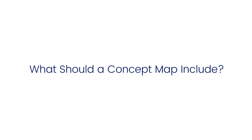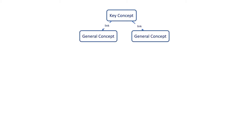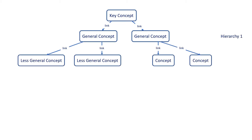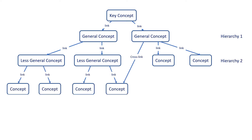What should a concept map include? First, identify the key concept or main topic. Think about the problem you want the concept map to resolve. This key concept should connect to all other concepts on your map and will direct the hierarchical structure. Second, categorize all the general concepts that relate to the key concept you identified. Order them with the most general concepts first — this comes under hierarchy 1 — followed by less general concepts, which come under hierarchy 2 and 3.